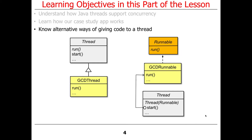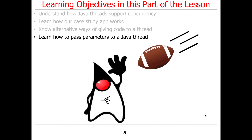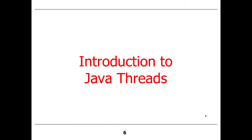We'll also talk about alternative ways of giving code to a thread. A number of people got this wrong in assignment 1a, so I'll explain it in detail. It's very important to understand this core concept, otherwise your threads will never do anything useful. And then we'll also talk about how to pass parameters to a Java thread, because that's kind of interesting to know.